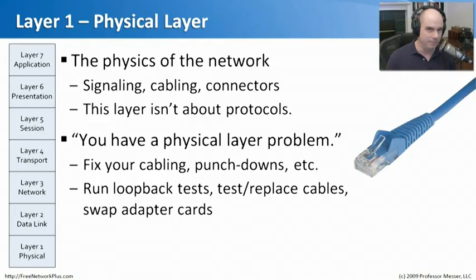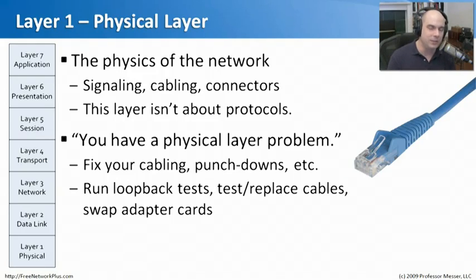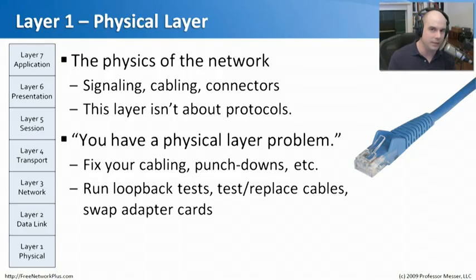You'll hear this a lot: 'You have a physical layer problem.' That means a problem with wiring, connectors, or something preventing the signal from getting across the network. This is usually where you begin your troubleshooting process — making sure you have a solid physical level. You want to verify your cabling, punch downs, run loopback tests over WAN links, test and replace cables, and swap out adapter cards. If we have a problem at this layer, it affects every single layer above it.